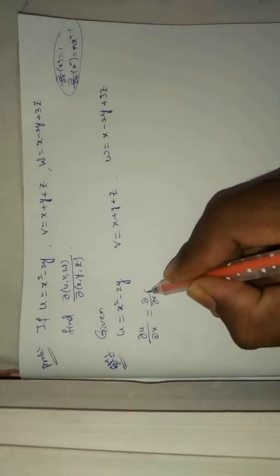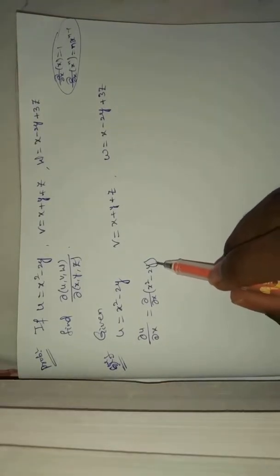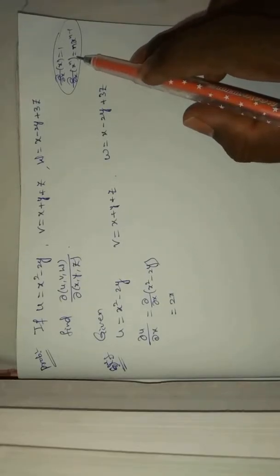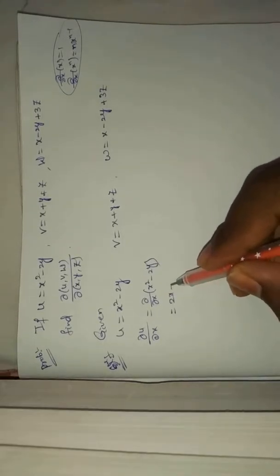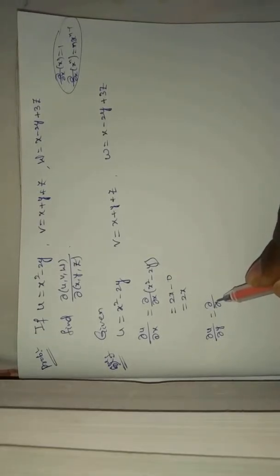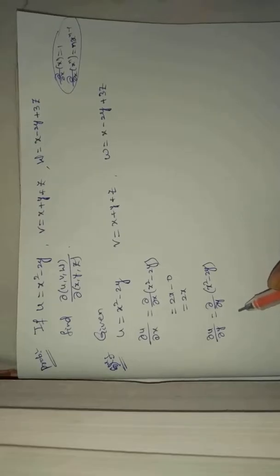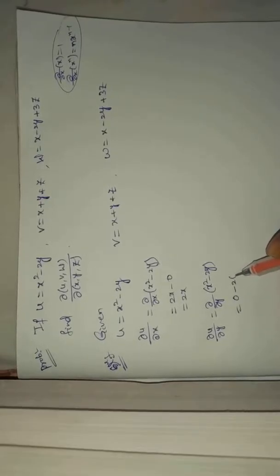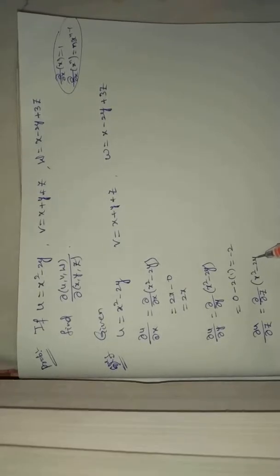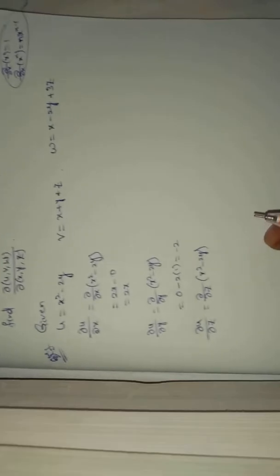First, ∂u/∂x: ∂/∂x of (x squared minus 2y) — the 2y term has no x, so it becomes 0. Using the second formula, this gives 2x minus 0, equals 2x. Next, ∂u/∂y: ∂/∂y of (x squared minus 2y) — the x squared term becomes 0, giving 0 minus 2 times 1, equals minus 2. Next, ∂u/∂z: the entire expression has no z term, so this equals 0.